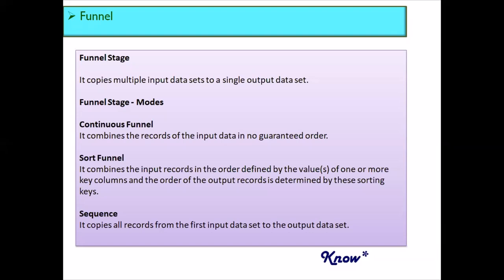The funnel stage has several execution modes. In continuous funnel mode, records are combined as they become available, so the final result is not in any particular order. In sort funnel mode, sorting is done on key column values that you define, and records are sorted based on those key values in the output. The third mode is sequence mode, where records are combined from each input link in the order in which the links are specified.